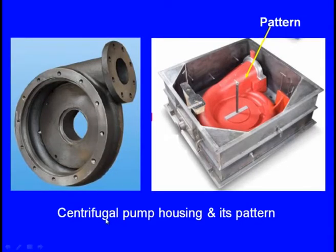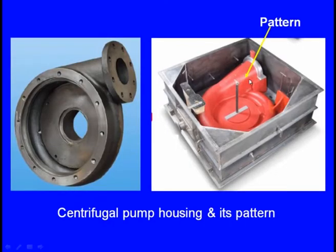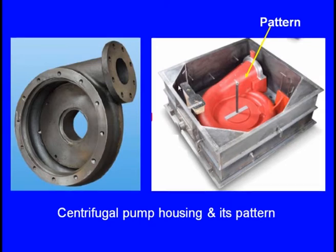Most of the time the pattern is made of wood; sometimes it is also made of metal or wax. For example, to manufacture a centrifugal pump housing, a wooden pattern of the same shape is kept in the moulding box, moulding sand is compacted around it, and after compaction the pattern is removed, then molten metal is poured.